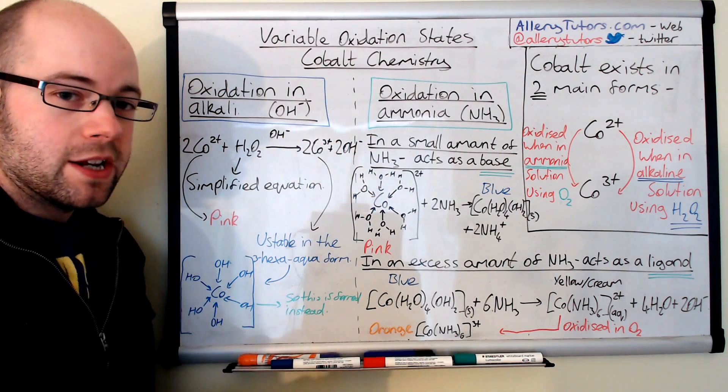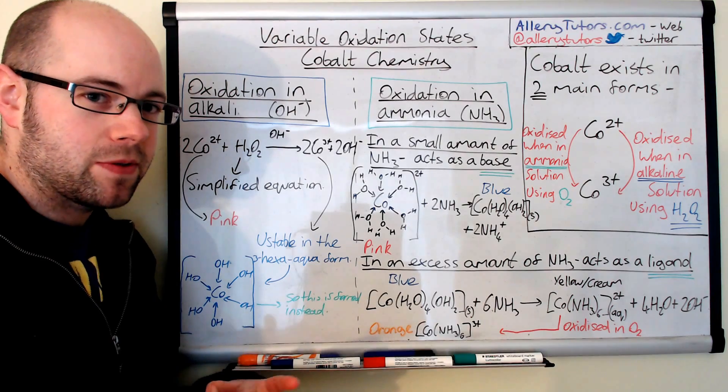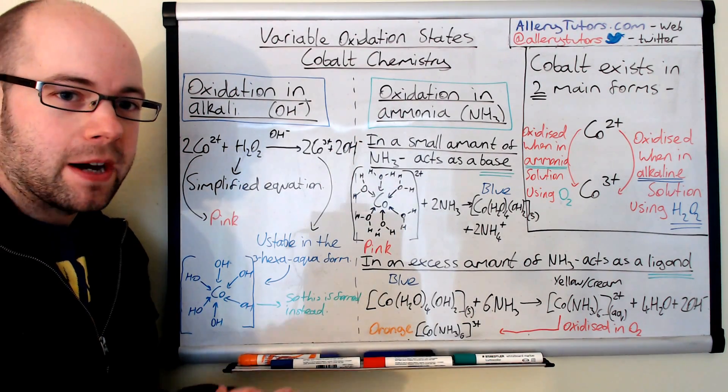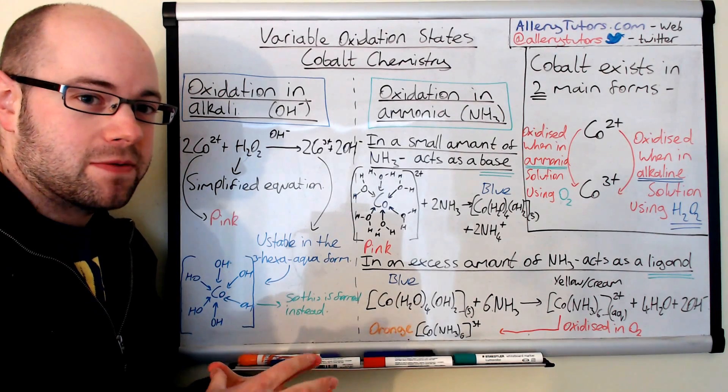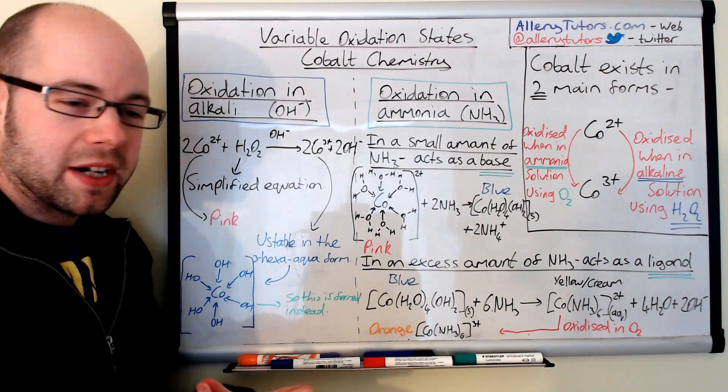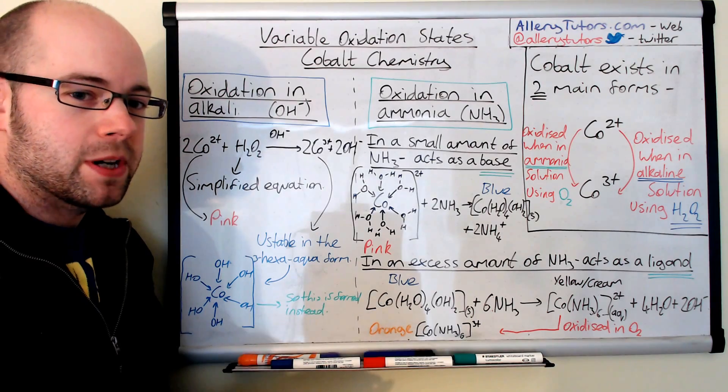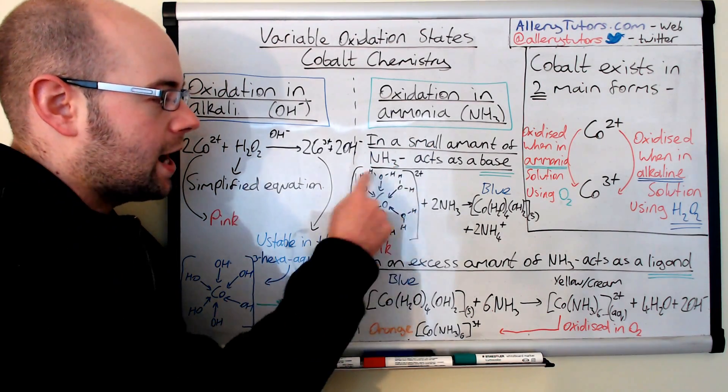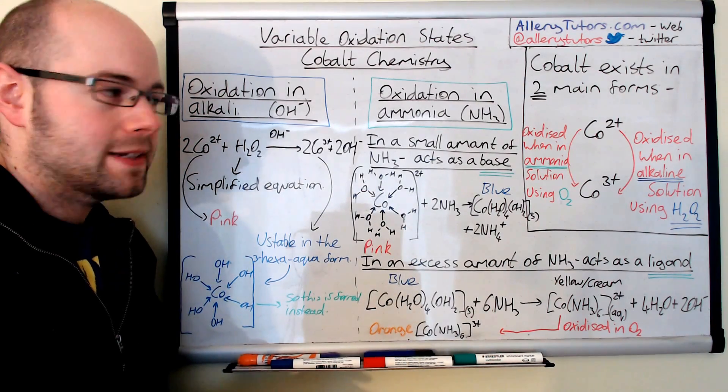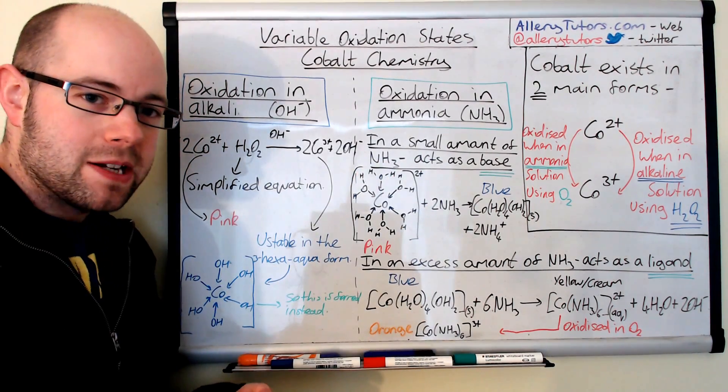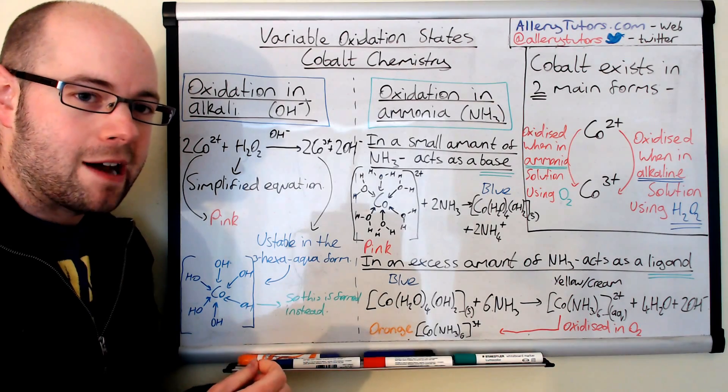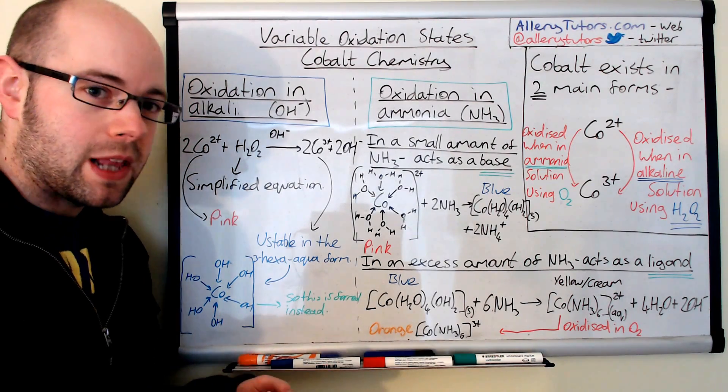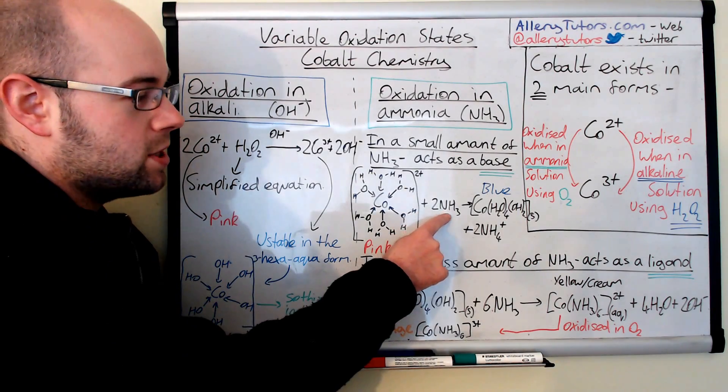The one that they're really interested in is this one though, because you get different types of compounds that are being formed. And this is oxidation using ammonia. Now, ammonia effectively acts as a base or it can act as a ligand, depending on the amount of ammonia that you put into it. So, if we add a small amount of ammonia to our hexa-aqua-cobalt complex, then effectively it acts as a base. And the definition of a base, of a Bronsted-Lowry base, is a proton acceptor. And in small quantities, ammonia will act as a base.